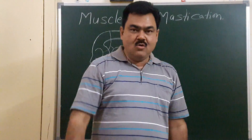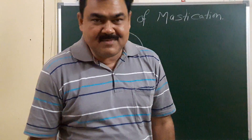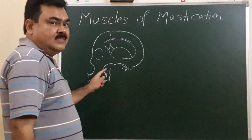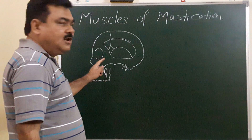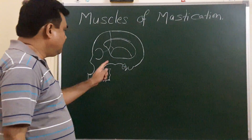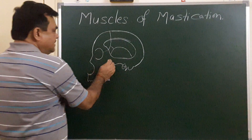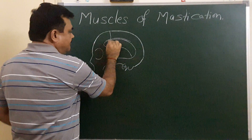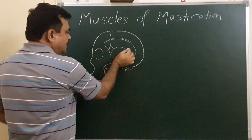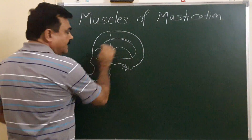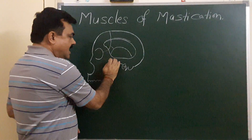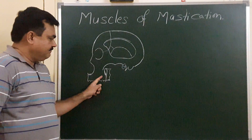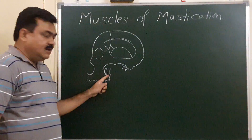We will discuss the muscles of mastication. First, we'll make a diagram of the lateral view of the skull. In this diagram, this is the superior temporal line, this is the inferior temporal line, this is the temporal fossa, here is the zygomatic arch, this is the zygomatic arch, this is the maxilla.